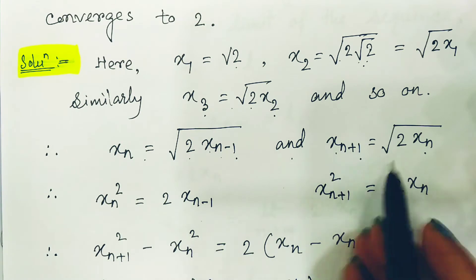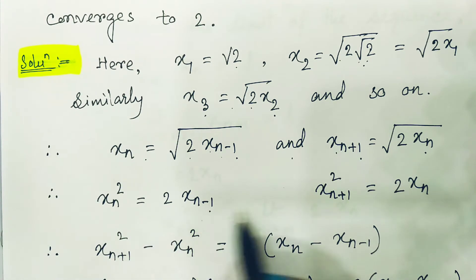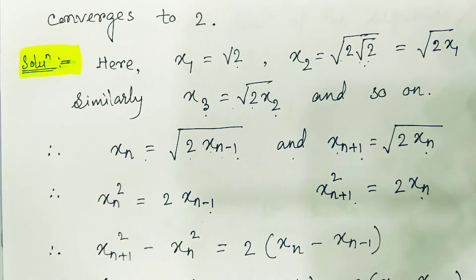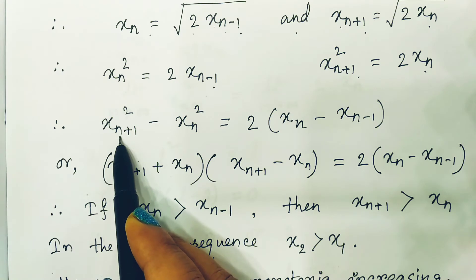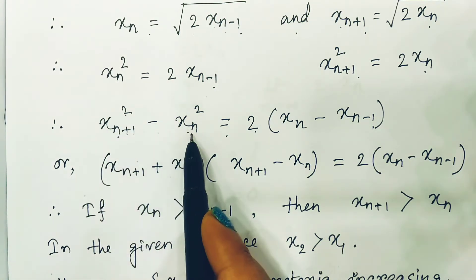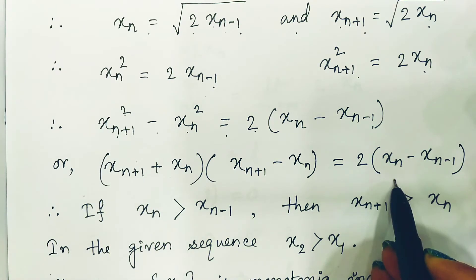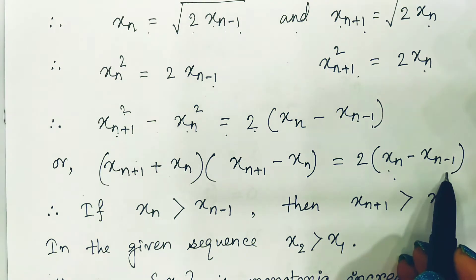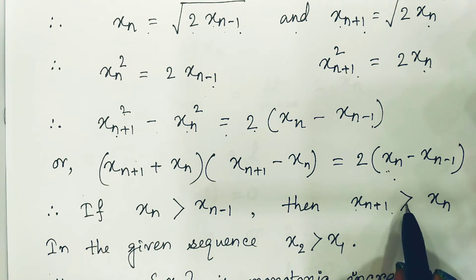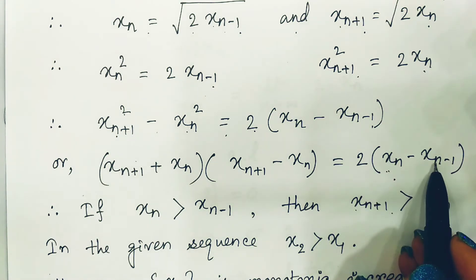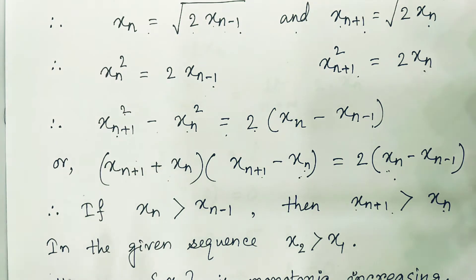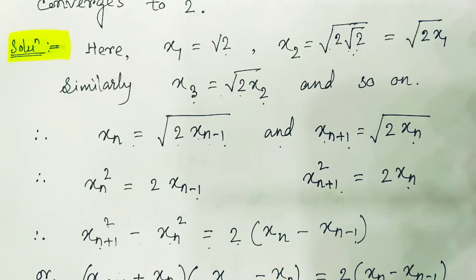Squaring both recurrence relations: xn² = 2·xn-1 and xn+1² = 2·xn. Subtracting these equations gives xn+1² - xn² = 2·(xn - xn-1), which factors as (xn+1 + xn)(xn+1 - xn) = 2·(xn - xn-1). So if xn > xn-1, this right side is positive, meaning xn+1 must also be greater than xn.